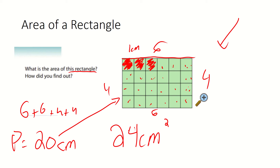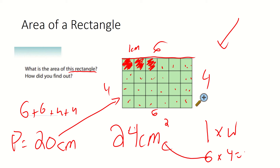What we did was we did the length times the width. The length here is six and the width is four, so six times four is 24 centimeters squared.